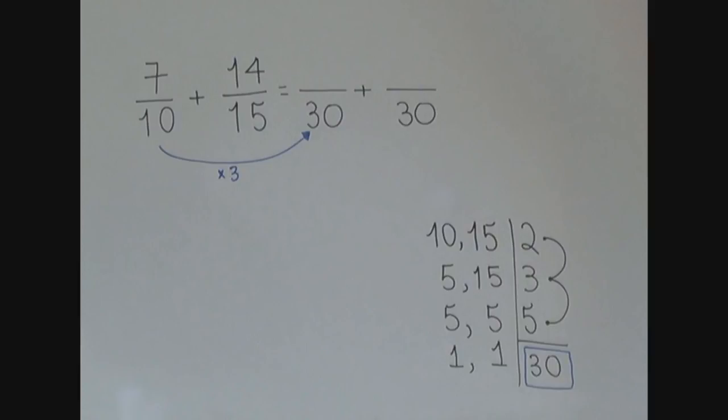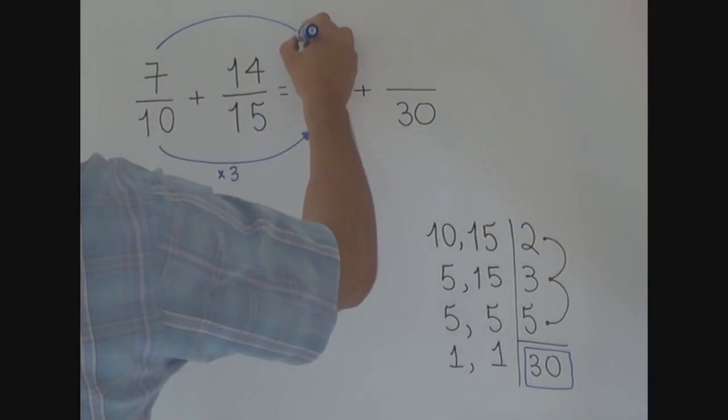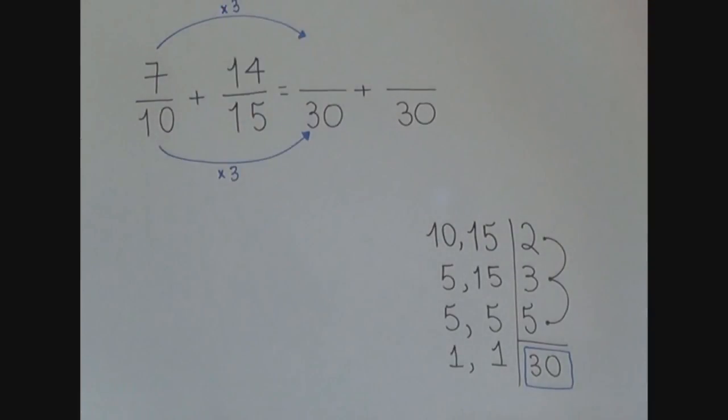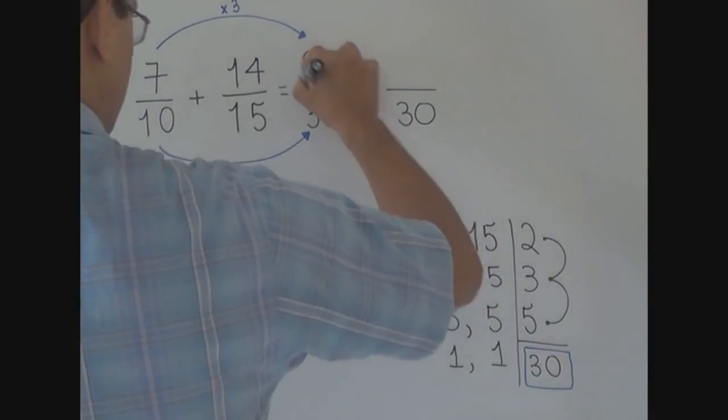It's the same thing. 10 times 3 equals 30. So, what is going to be the new numerator of the equivalent fraction? You just multiply 7 times 3 and get 21.